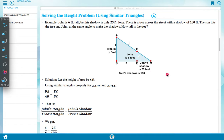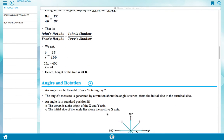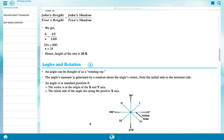Using all this information we will find the solution. Let the height of tree be x feet. We have to assume this. Using similar triangle properties for triangle ABC and triangle DEF, here DE upon AB is equal to EC upon BC. That is John's height upon tree's height is equal to John's shadow upon tree's shadow. We get 6 upon x is equal to 25 upon 100. Cross multiplying, 25 into x is equal to 6 into 100, 600. x is equal to 24. Hence height of tree is 24 feet.